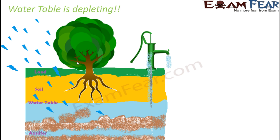A major worry is that the water table has started depleting. At many places it has become very difficult to locate the water table because it doesn't exist very prominently. This is a serious threat, meaning there is not enough water below the ground — groundwater is depleting at an alarming rate.